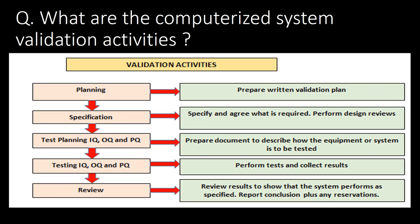What are the computerized system validation activities? There are five major activities. First, planning, where a written validation plan is prepared. Second, specification, where we specify and agree on what is required and perform design reviews. Third, test planning for IQ, OQ, and PQ, where we prepare documents to describe how the equipment or system is to be tested. Fourth, testing IQ, OQ, and PQ, where we perform tests and collect results. Fifth, review, where we review results to show that the system performs as specified and report conclusions plus any reservations.